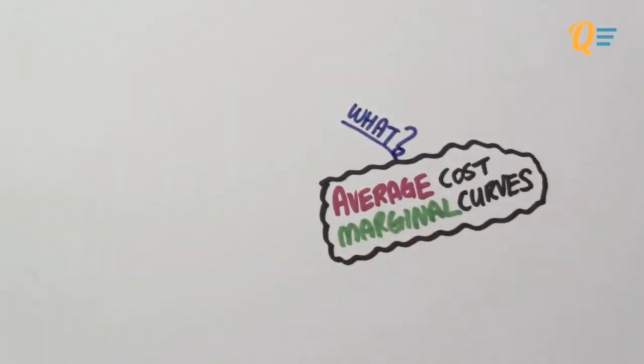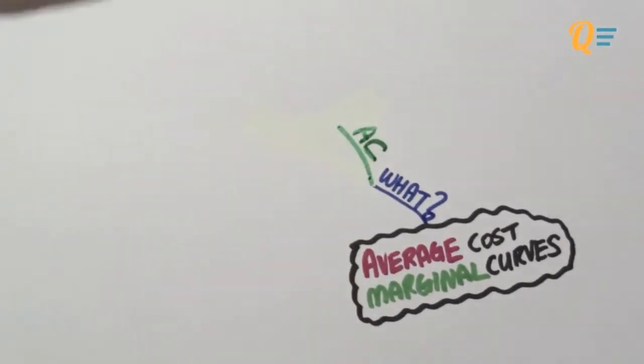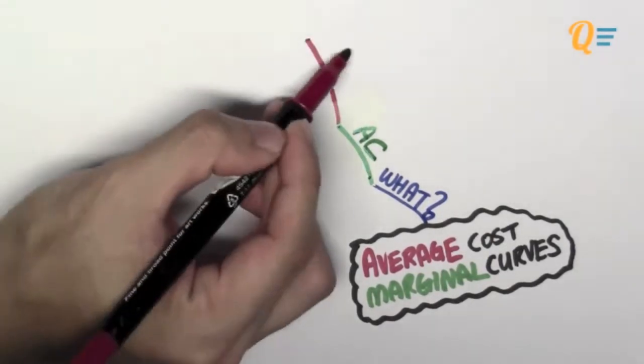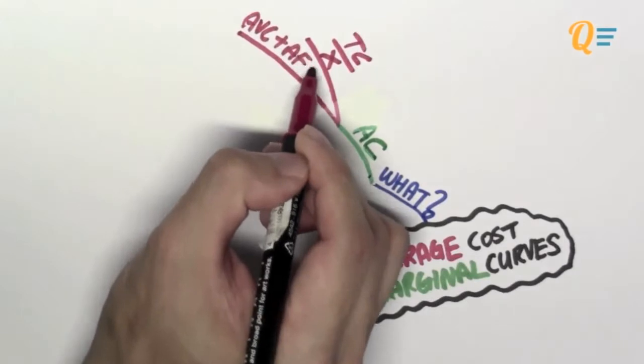So what are these curves? We're going to start one by one. Let's talk about the average cost curve first, shall we? Judging from its name, it's easy to see that the average cost is equal to the total cost divided by the total quantity of x produced.